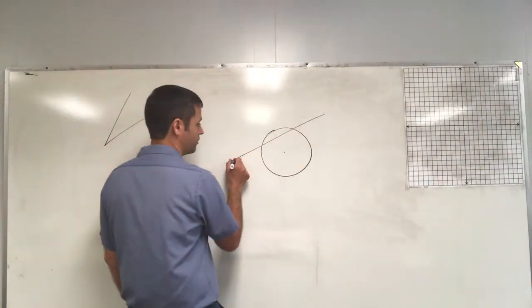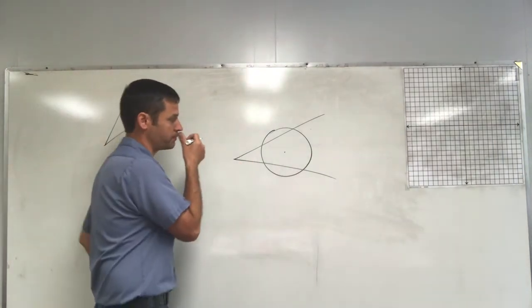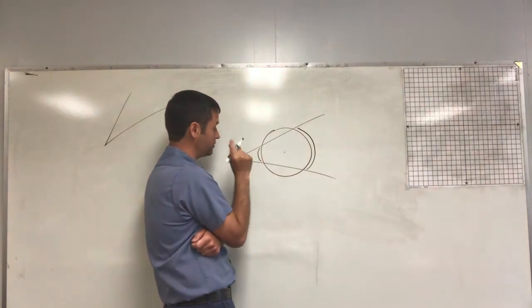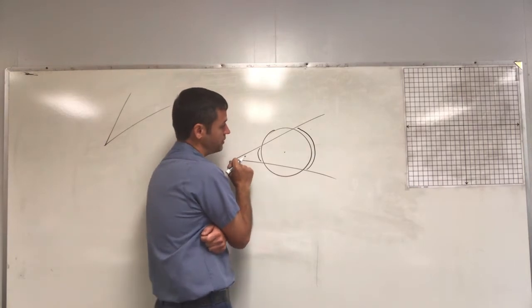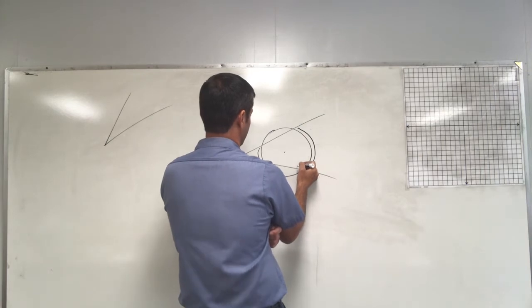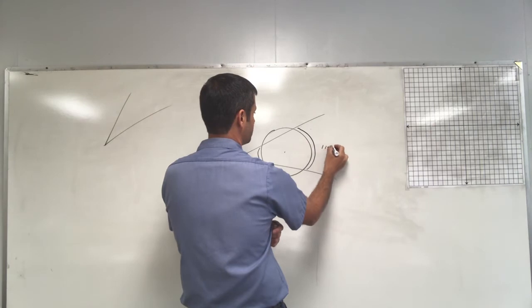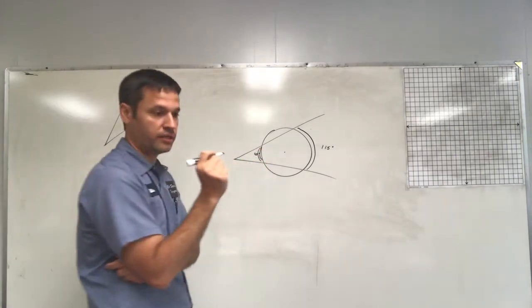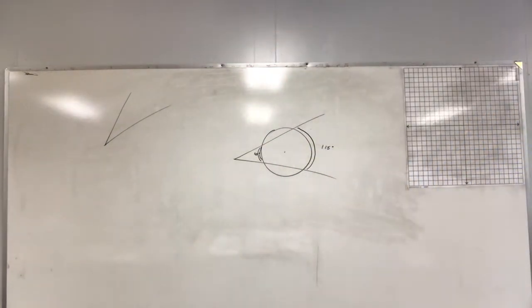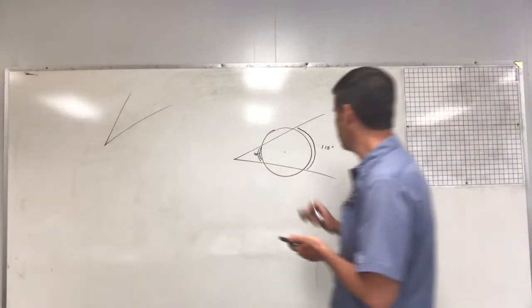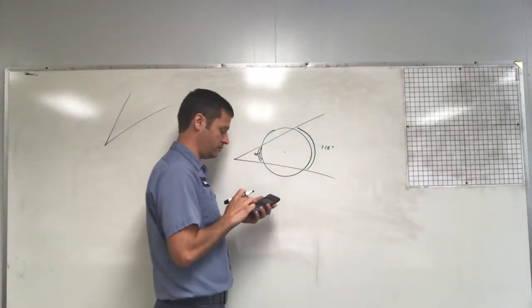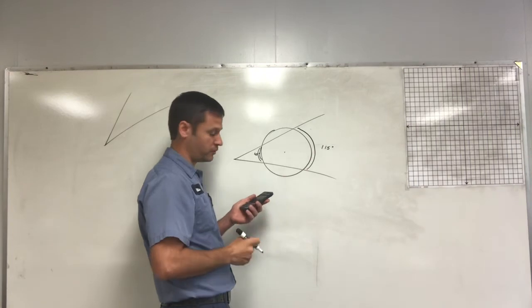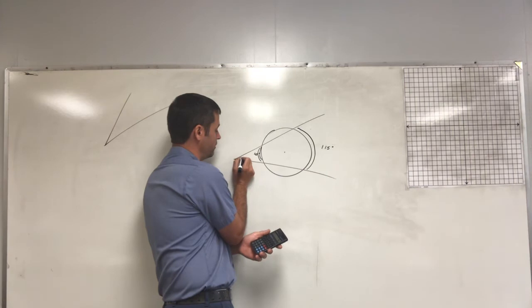Draw a simple circle cut by an angle. Find the measure of this arc and this arc, and if you know those two, you can figure out the angle. Let's say this arc is 115 degrees and this one is 45 degrees. Find the difference: 115 minus 45 equals 70. Then divide by 2 — because it's half the difference — equals 35. So this angle right here is 35 degrees.